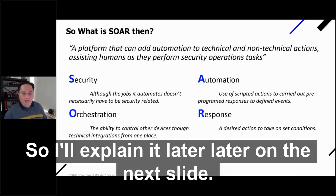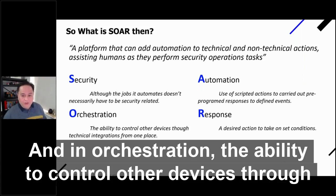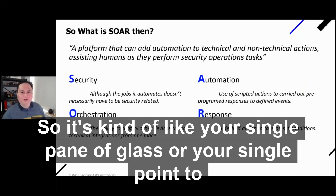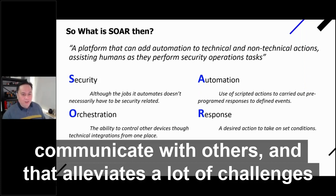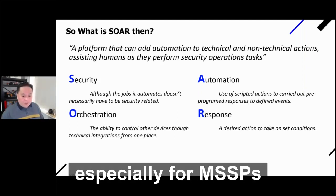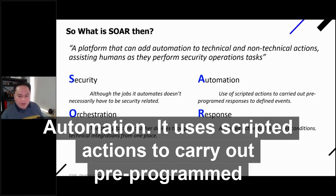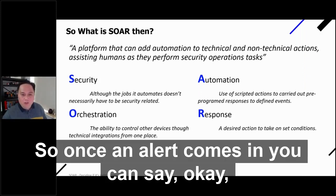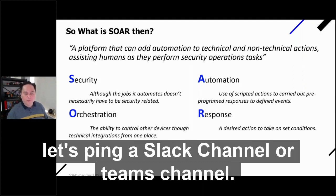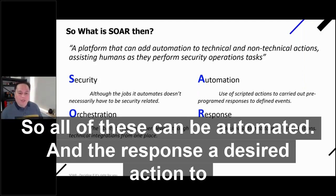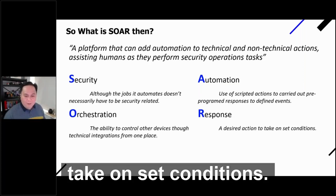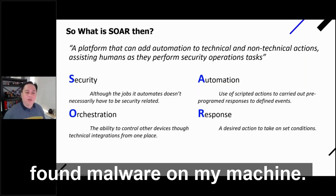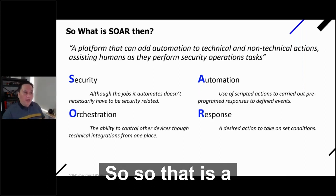Orchestration is the ability to control other devices through technical integrations from one place — kind of like a single pane of glass or single point of communication, which alleviates a lot of challenges especially for MSSPs. Automation uses scripted actions to carry out pre-programmed responses to defined events — for example, when an alert comes in, you can automatically ping a Slack or Teams channel. Response is the desired action to take on set conditions, such as when malware is found on a machine, automatically containing that device.